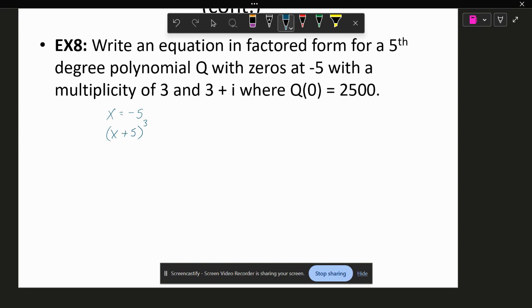The three plus i. The way that this works with this factor is because of the conjugate, I also have three minus i as a zero. So it's x minus three plus i and x minus three minus i.